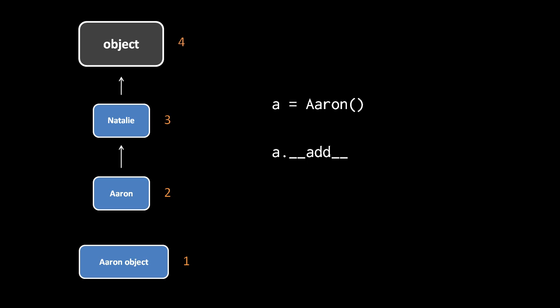First, Python looks in the Aaron instance object itself, then it looks in the class Aaron, then in its parent, all the way up to object.